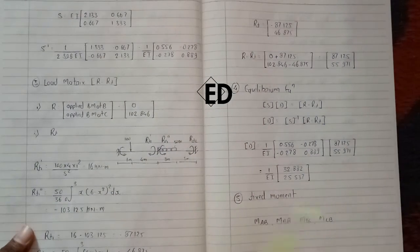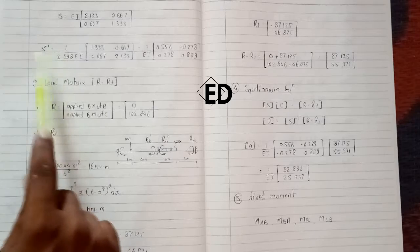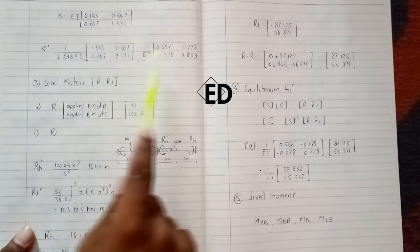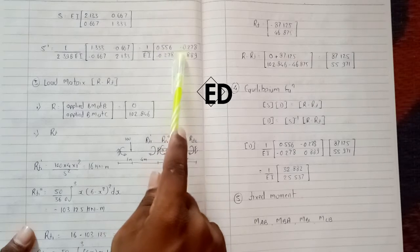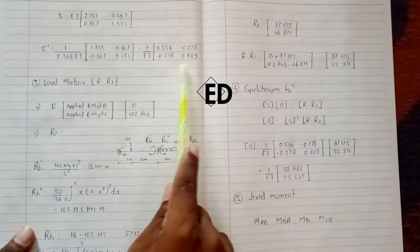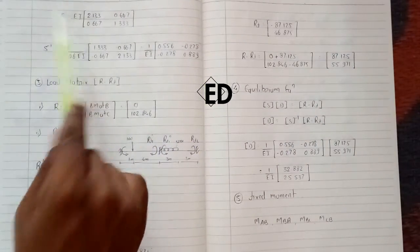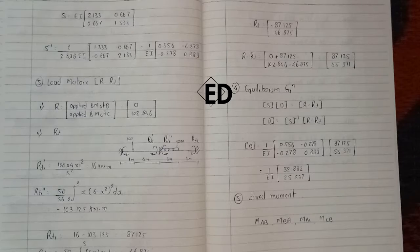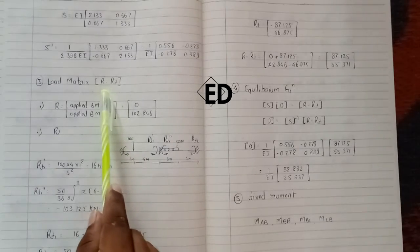For convenience in later steps, we compute the inverse of the stiffness matrix. The inverse is (1/EI) × [0.556, −0.287; −0.287, 0.889]. Now moving to our third step: the load matrix, where we calculate the R minus R_F matrix.